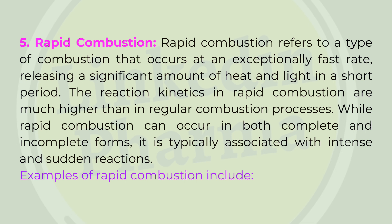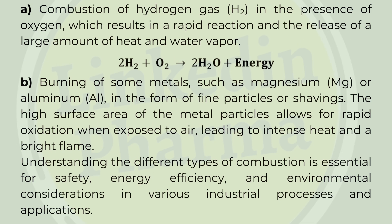Examples of rapid combustion include combustion of hydrogen gas (H₂) in the presence of oxygen, which results in a rapid reaction and the release of a large amount of heat and water vapor, and burning of metals such as magnesium (Mg) or aluminum (Al) in the form of fine particles or shavings. The high surface area of the metal particles allows for rapid oxidation when exposed to air, leading to intense heat and a bright flame. Understanding the different types of combustion is essential for safety, energy efficiency, and environmental considerations in various industrial processes.